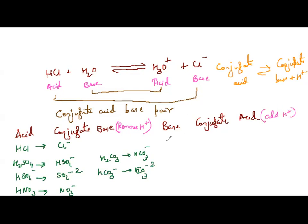For base examples: NH₃ has conjugate acid NH₄⁺; H₂O as base has conjugate acid H₃O⁺; H₂O as acid has conjugate base OH⁻.